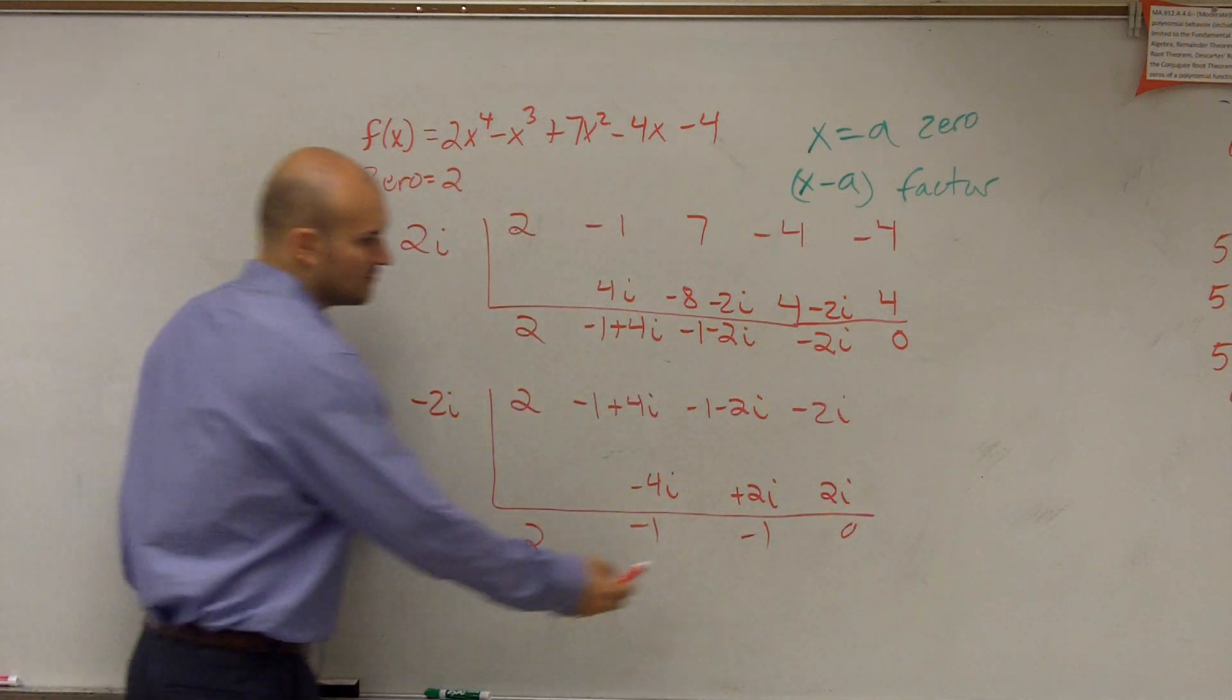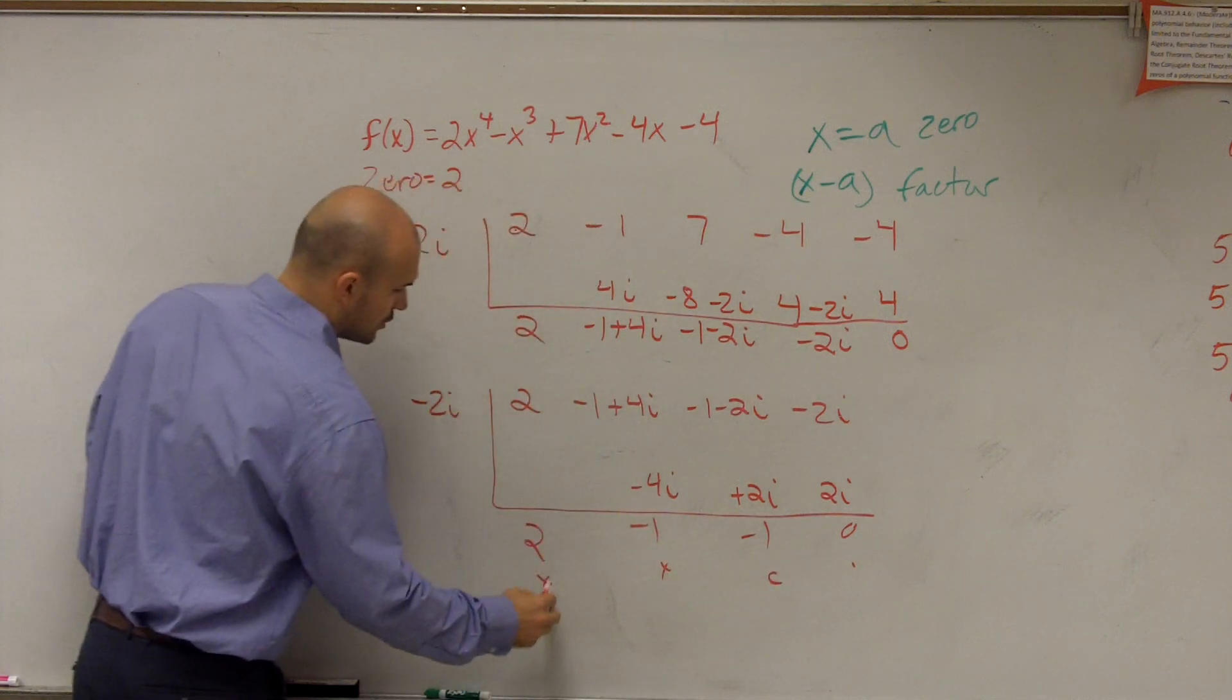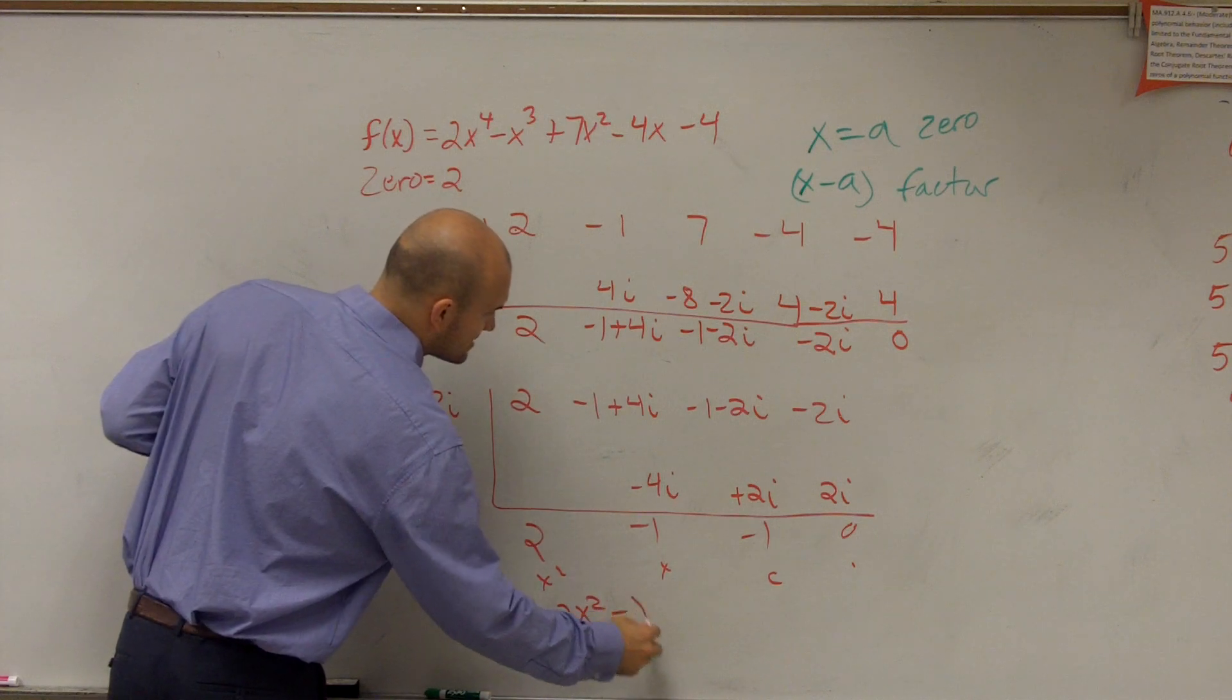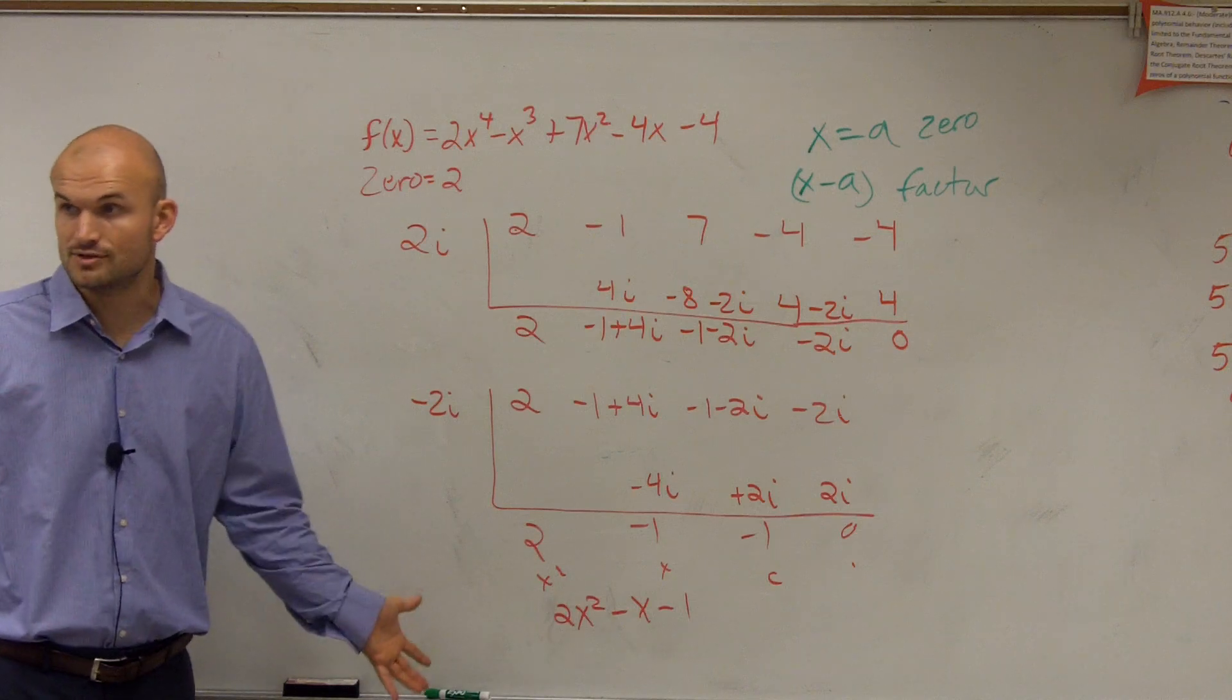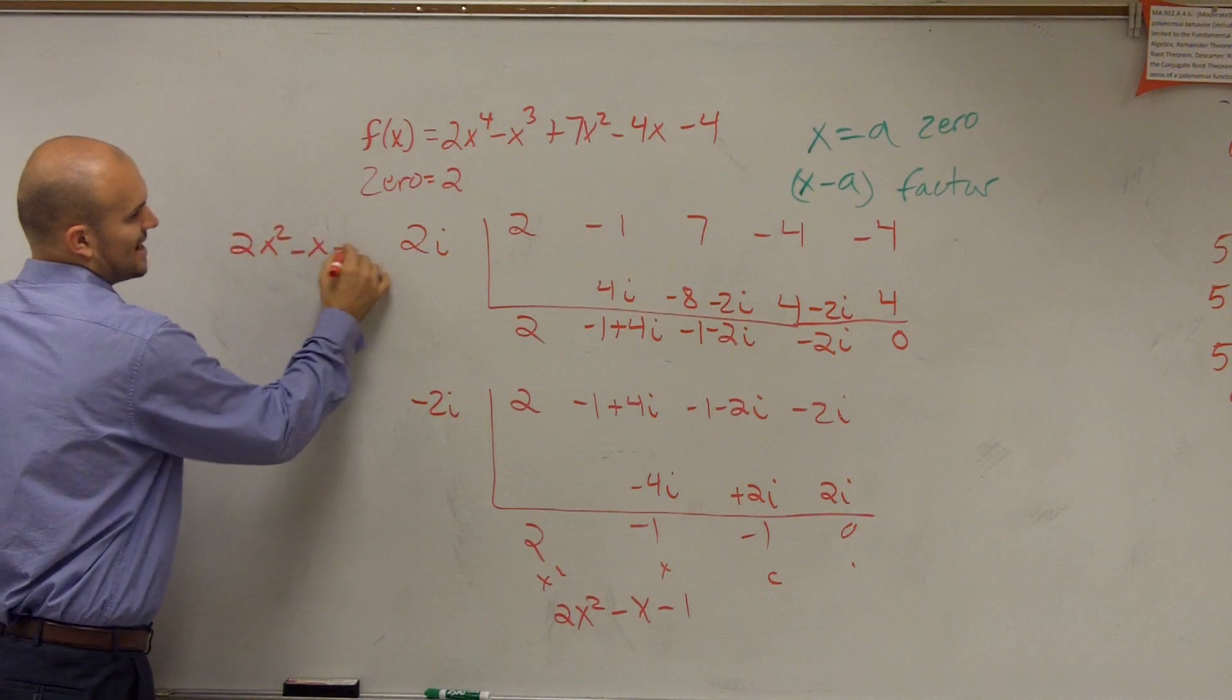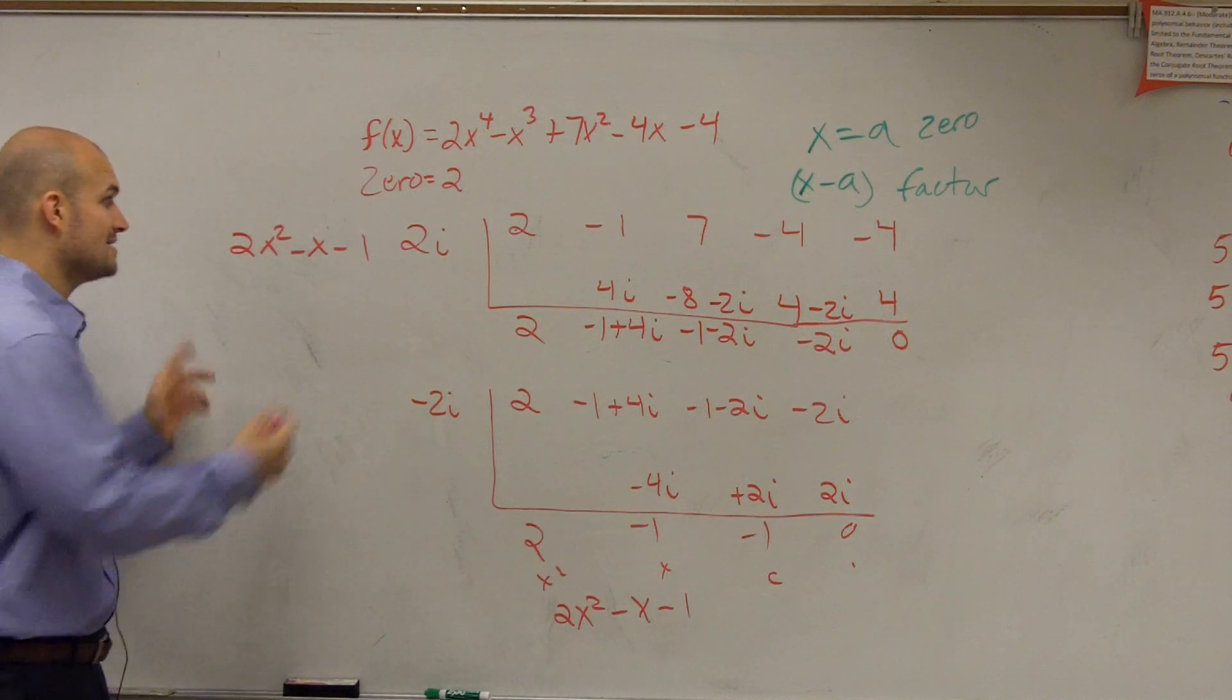Is that a zero? Yes. What's my remaining result? That's my remainder, my constant, linear, quadratic. So what I have is 2x squared minus x minus 1. Now they're trying to find all the zeros though, right? So I write this out. 2x squared minus x minus 1.